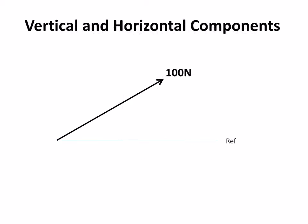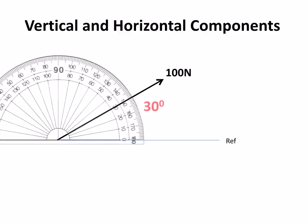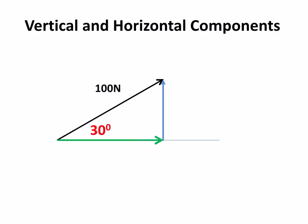Here we've got 100 newtons, and it's acting at an angle to the reference. The reference is the horizontal. So let's see what angle we've got there, 30 degrees. So that 100 at 30 degrees can be represented by its vertical component and its horizontal component.